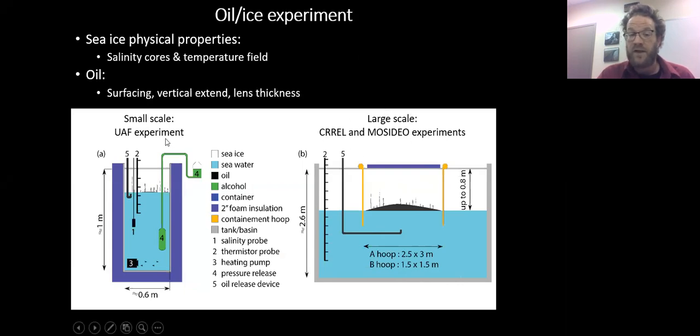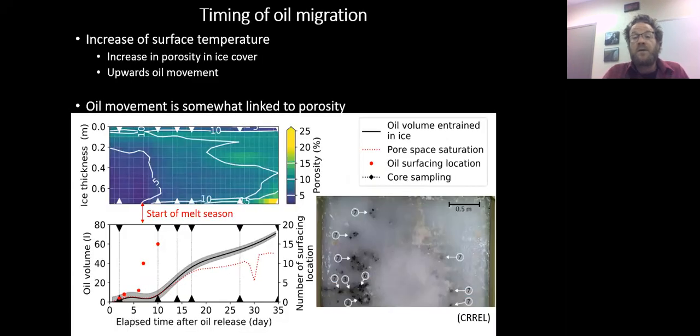I'm referring to three different experiments: the UF experiment which is a small scale experiment, and two large scale experiments, one with CRREL and the other with Mosiodlo in Angle. With the CRREL experiment, we have an amazing subset of the experiment giving us data about the timing of the oil migration. What you're looking at here are colorful pictures taken with regular scientific cameras. With the temperature field, we've been computing the porosity field throughout the experiment from the oil release here on day two until the end of the experiment on the start of melting on day eight.